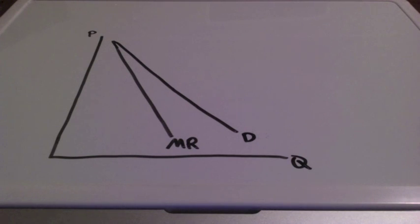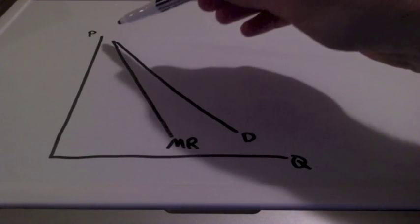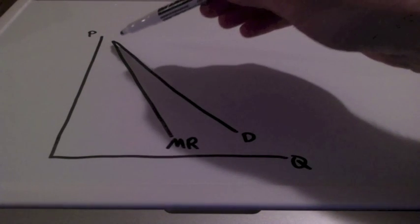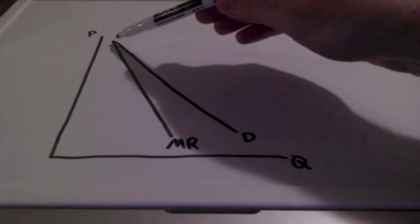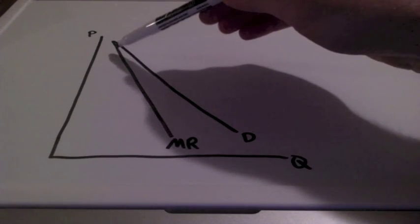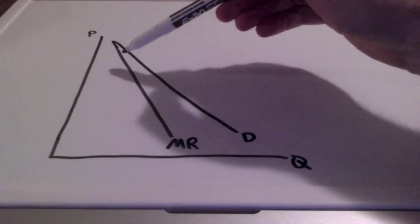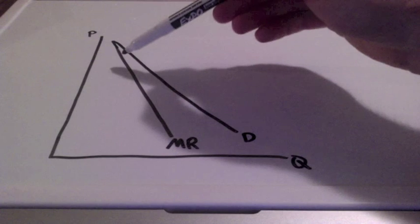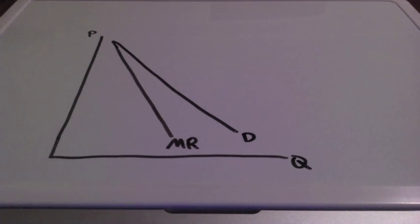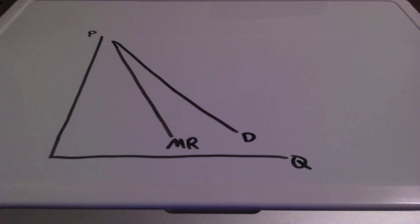In this monopoly, the firm would like to charge as high of a price as possible to earn the highest amount of marginal revenue that they can. This firm is not willing to lower its prices. Let's take a look to see where the firm is going to produce and where to locate profits.